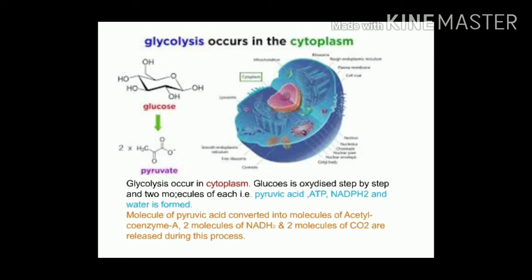Glucose molecules are present in the cell. Glucose has 6 carbon atoms, 12 hydrogen atoms and 6 oxygen atoms, with covalent bonds present between all atoms. When a molecule is oxidized, it gains O2 atoms or loses electrons. Carbohydrates from the food we consume are mainly utilized for production of energy, which is obtained in the form of ATP.